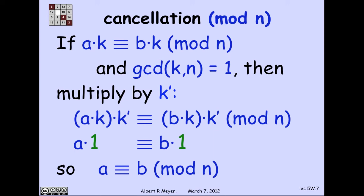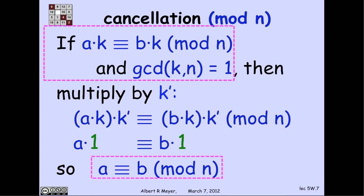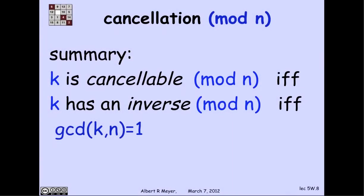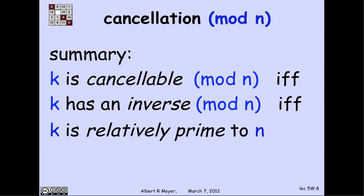And, in fact, you can work out the converse implications. The punchline of this is, first of all, this is the cancellation rule. You can cancel providing that the gcd of k and n is 1, that k is relatively prime to n. So this is the summary: k is cancelable (mod n) if and only if k has an inverse (mod n), if and only if gcd(k,n)=1, which I can restate as k is relatively prime to n. And that's the story.